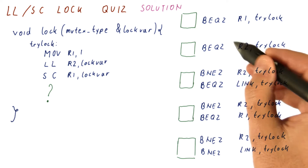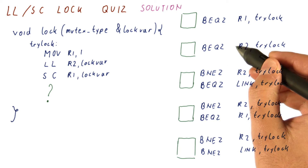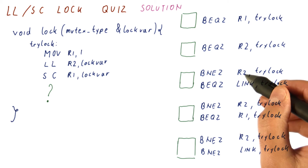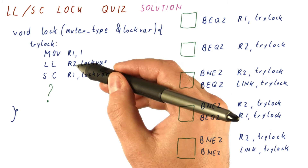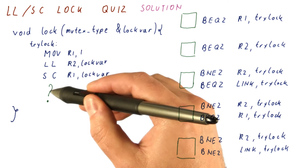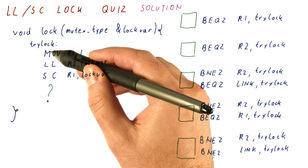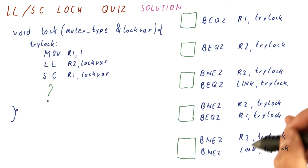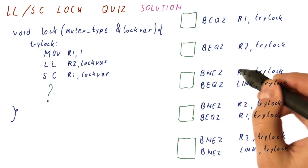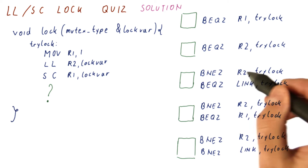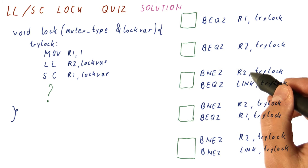So this is definitely not a correct solution. We need to check R2 for not-equal-zero, meaning we found a non-zero value, which means the lock was busy and we retry. So one of these three are going to be the correct answer because they include the correct check for whether the lock was available.